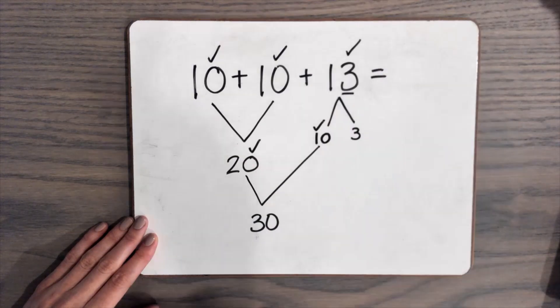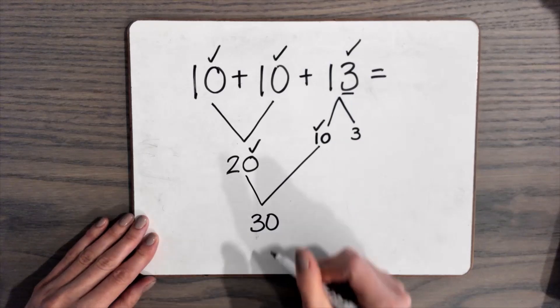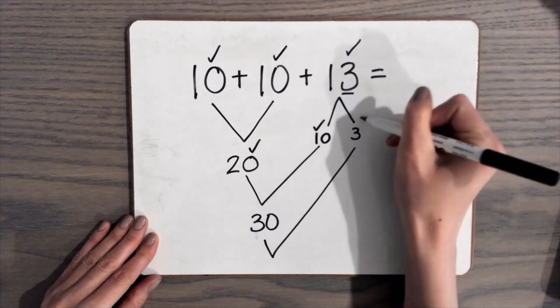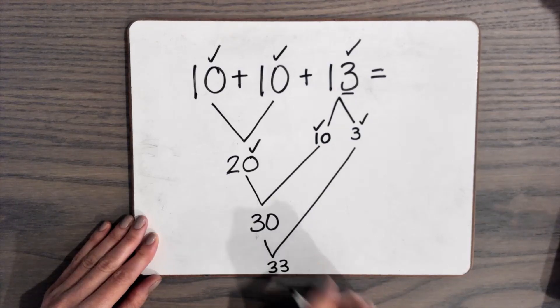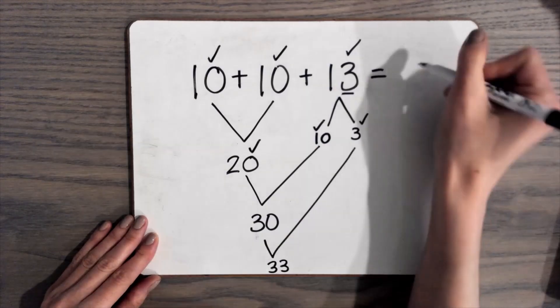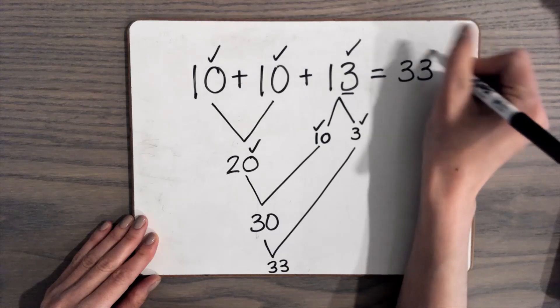Be sure to check off all the numbers so you know what you've used. And then 30 plus 3, that's the only number we have left, is 33. So our answer is 33. All right. Thank you.